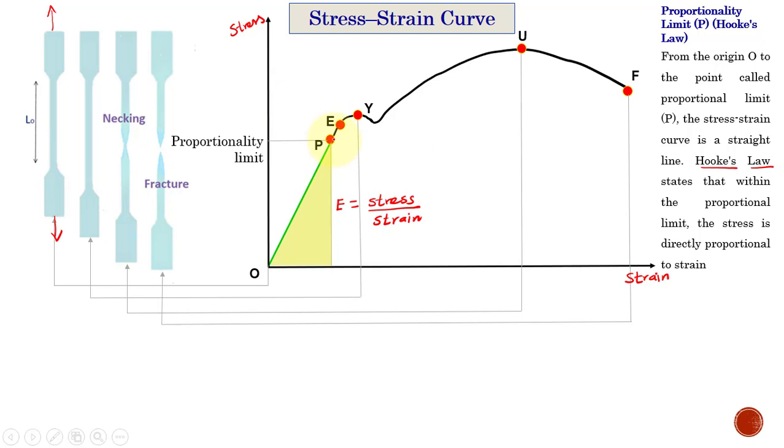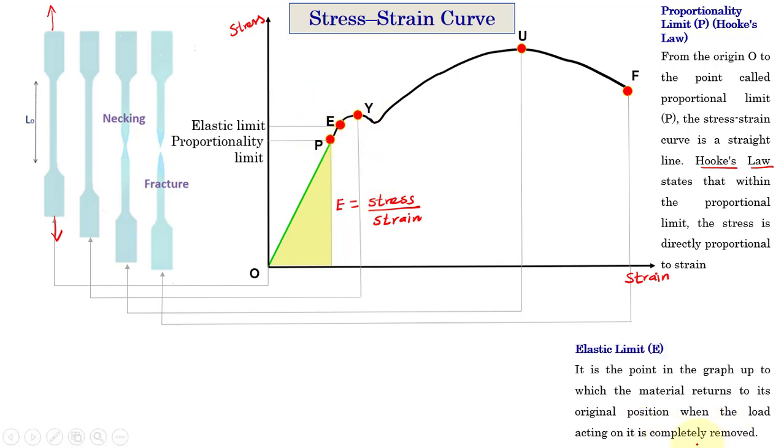After this point P, we got another point E that is called the elastic limit. Until this point also, the material has the elastic behavior. However, from P to E, it is not a straight line, as we have got from O to P. From P to E, it is not a straight line. However, the material is capable of regaining its original shape and dimension when the load which is acting on it is completely removed.